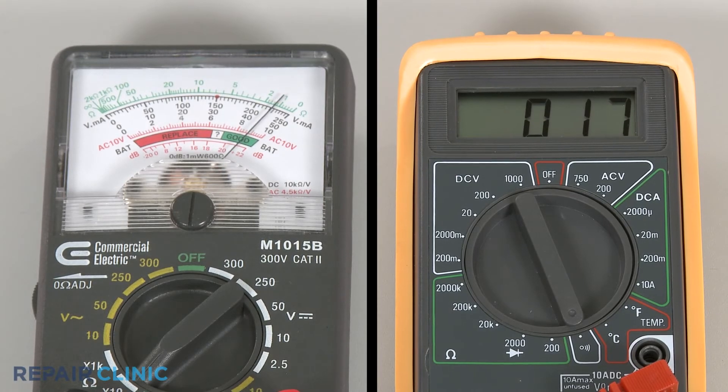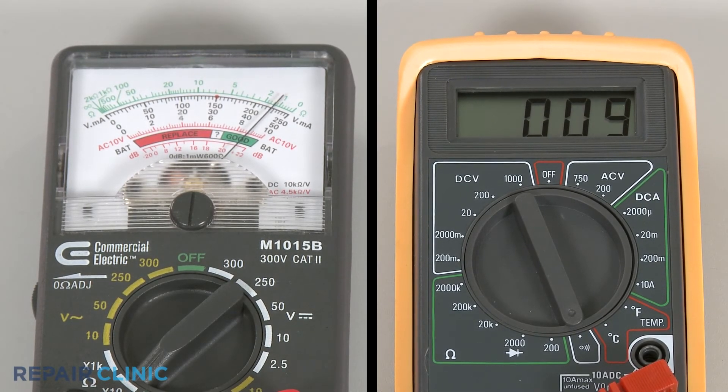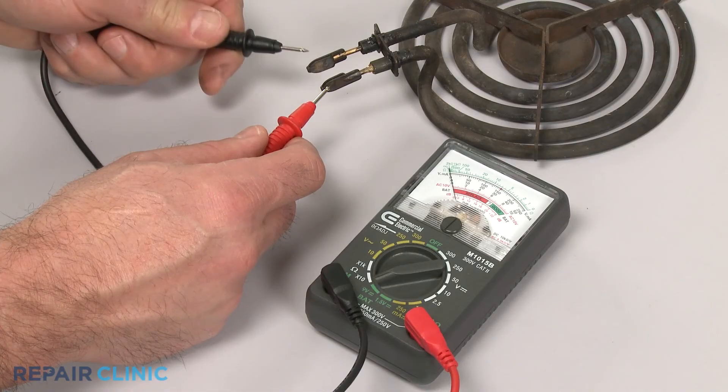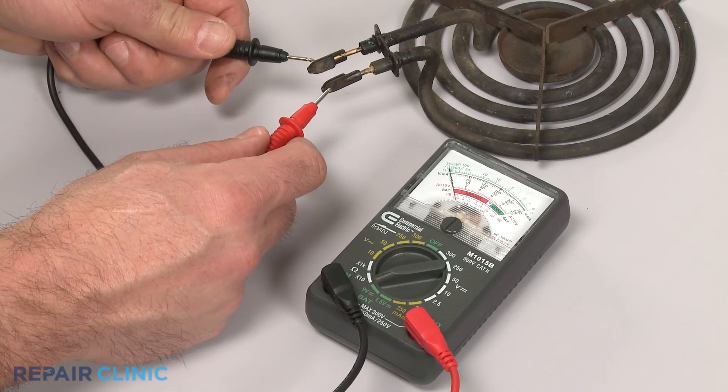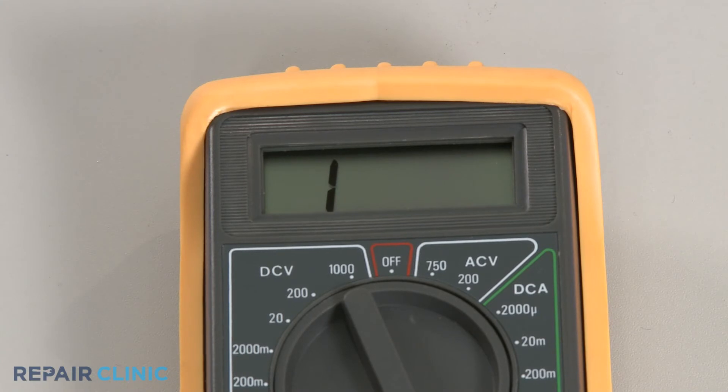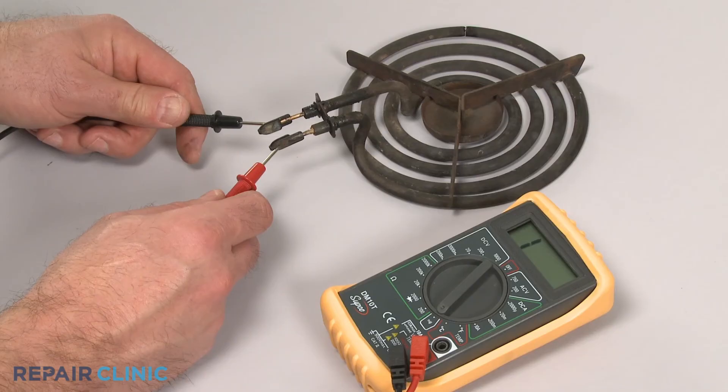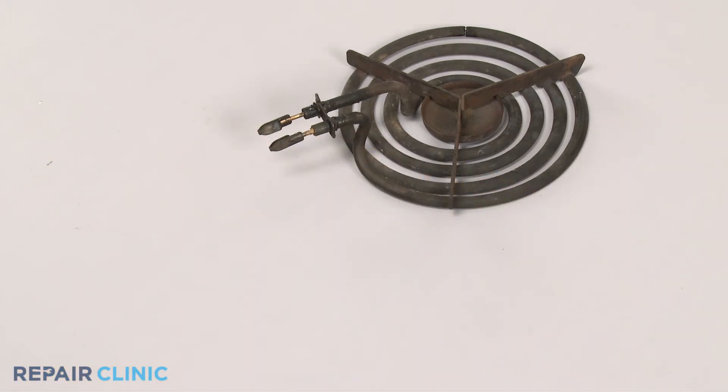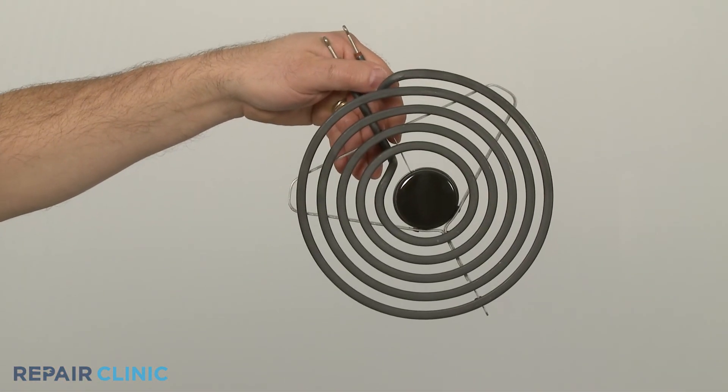If the meter reading shows a result between 0 and 50 ohms of resistance, the element has continuity. If the needle does not move, or the digital display does not change significantly, there is no continuity, which means the element is burned out and will need to be replaced.